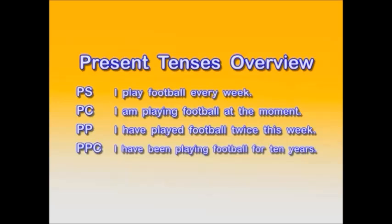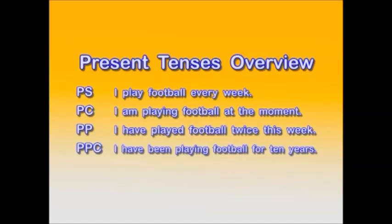Our final present tense is the present perfect continuous tense. Our example sentence — I have been playing football for ten years — has the structure: subject, plus auxiliary verb have or has, plus a second auxiliary verb — been — plus verb with -ing: I have been playing. Very much like the present perfect, the present perfect continuous relates the past to the present, but with more focus on the continuity or the duration of the action. It can also be used to express the unfinished past — I have been playing football for ten years — an action that began in the past and still continues in the present.